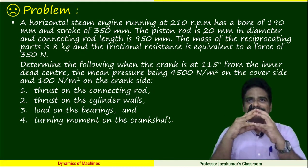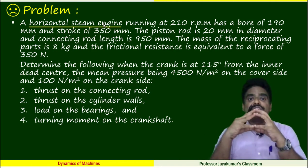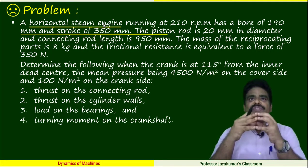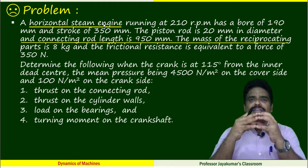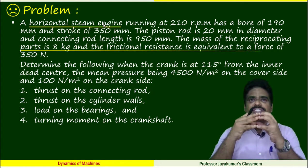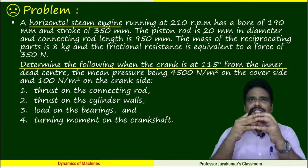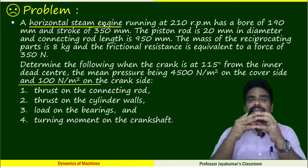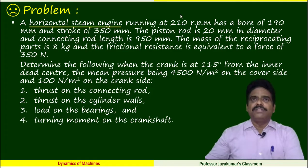Let us read the problem carefully. Given data is horizontal steam engine running at 210 RPM with a bore of 190 mm and stroke of 350 mm. The piston rod is 20 mm in diameter and the connecting rod length is 950 mm. Mass of the reciprocating parts is 8 kg and the frictional resistance is equal to a force of 350 Newton. Determine the following when the crank is at 115 degrees from inner dead center. The mean pressure on the cover end being 4500 N/m² whereas on the crank side pressure is 100 N/m².